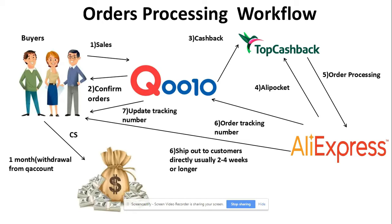Once you have processed the order, AliExpress will provide an order tracking number and ship out to customers directly. What we need to do is take this tracking number and update it to the buyer in the Q10 platform. This will change the order status to 'on delivery' in Q10. Do take note that even though we have updated the tracking number, buyers will not see it because we are using Q Express.